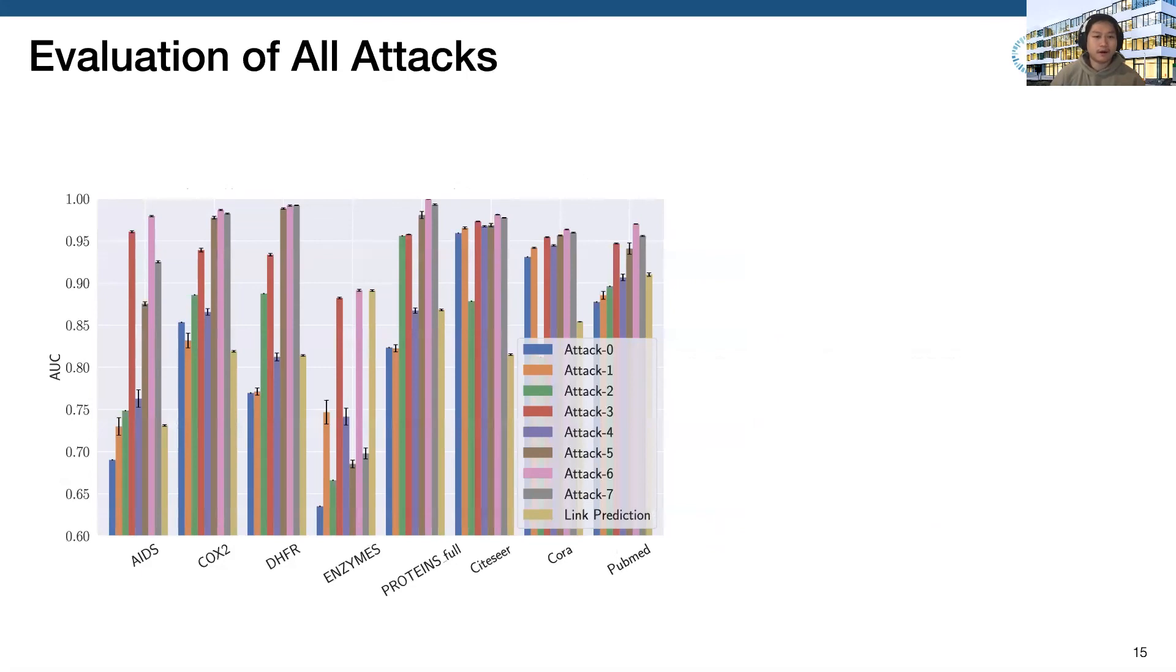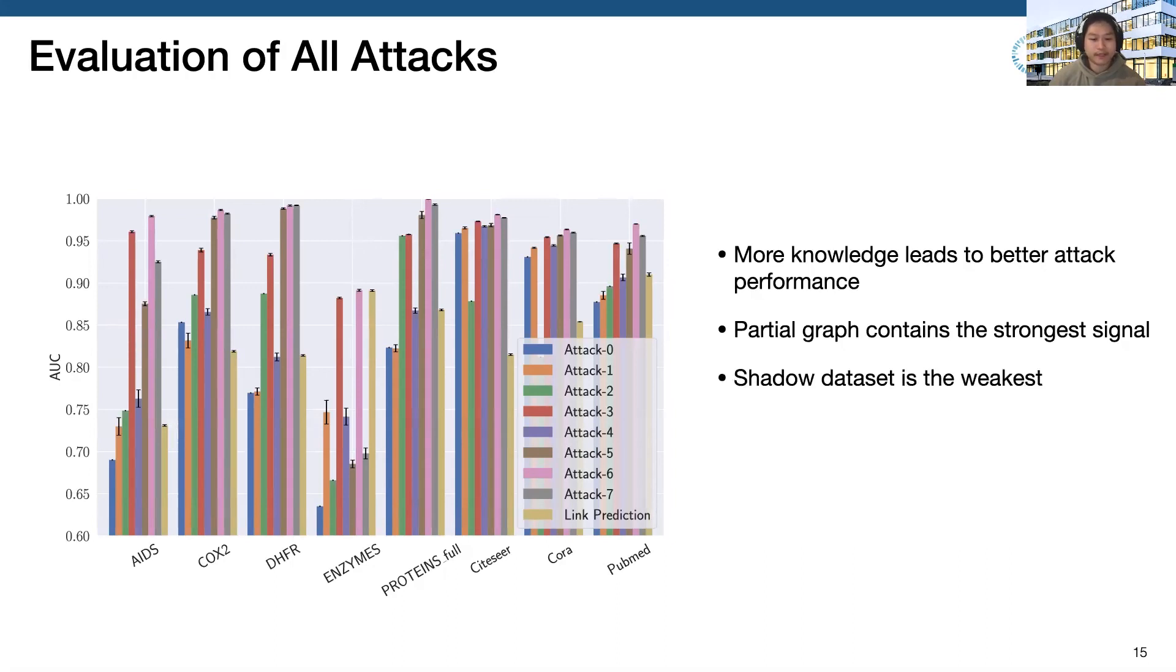Now let's see some overall evaluation results. We have several observations here. First of all, we find that in general, more knowledge leads to better attack performance. And among the three factors, we find that partial graph contains the strongest signal, while a shadow dataset is the weakest one. And also, we find that our attack has better performance than the traditional link prediction. This means that GNN indeed leaks graph information.